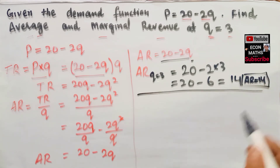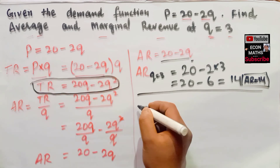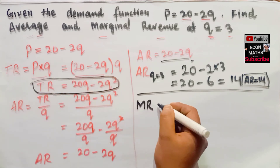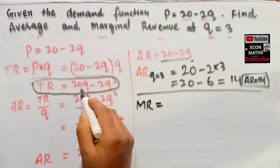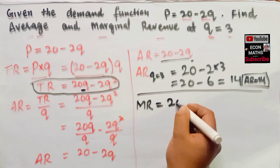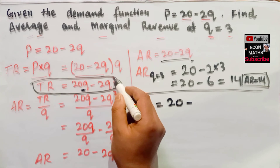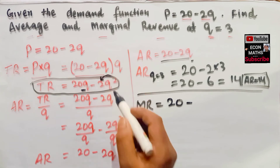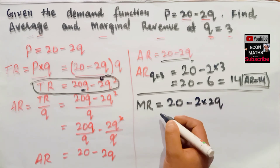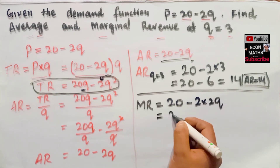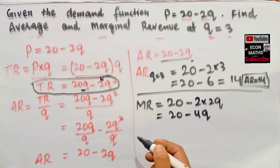Now to find the marginal revenue, we differentiate the total revenue function with respect to Q. The derivative of 20Q is 20, and the derivative of 2Q squared — the exponent 2 becomes the coefficient — gives us 4Q. So marginal revenue is equal to 20 minus 4Q.